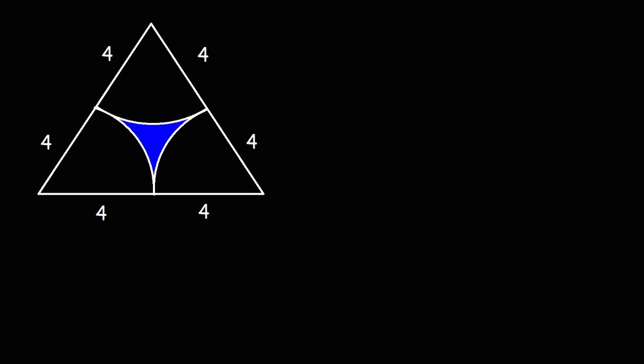We have segments or portions of three circles inscribed inside a triangle and we're given the radius of those circles which is four. Using that information, find the area of the shaded region.